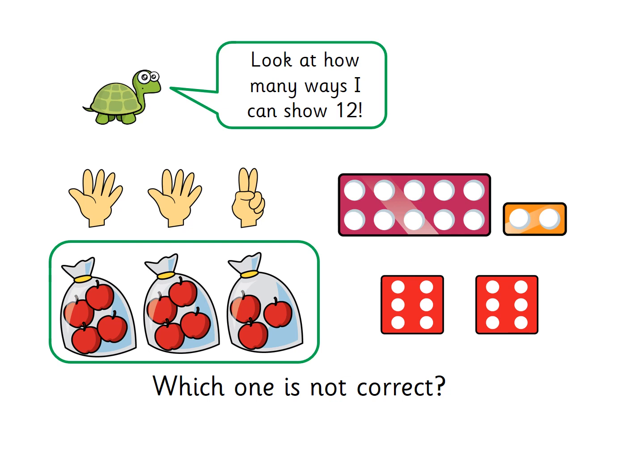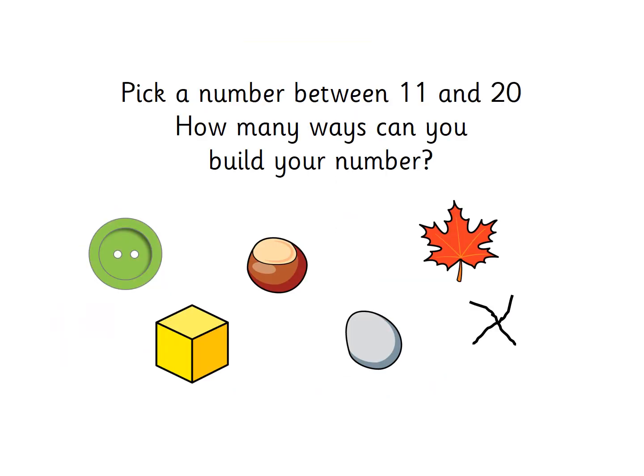Now pause this video: pick any number between 11 and 20, and see how many ways you can build it. You might use blocks, leaves, twigs, stones, buttons, Lego, figures, Barbies, or action figures — anything you want. An adult can think of a number and you count out that many toys. Take turns for about five minutes. If you have 10, start with those on one side and count on from 10.